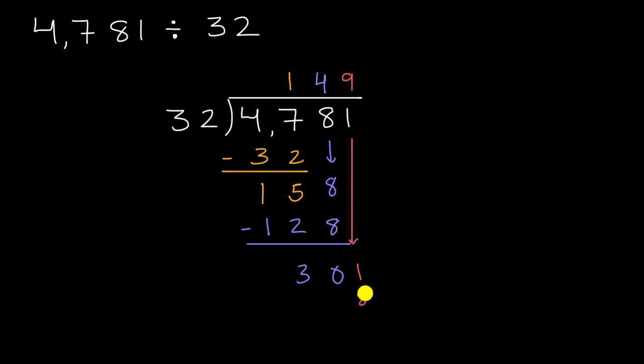Nine times two is 18, carry the one. Nine times three is 27, plus one is 28. And then we can subtract. And we're actually gonna have to do a little regrouping here. You might be able to do it in your head. To go from 288 to 301, let's say you would add 12 to get to 300 and then one more, 13.